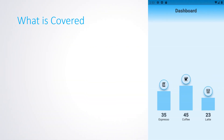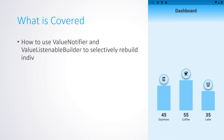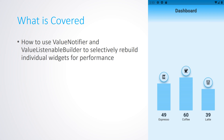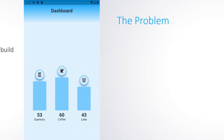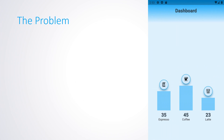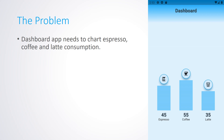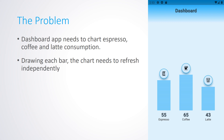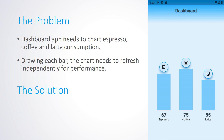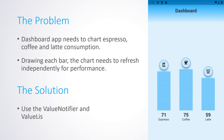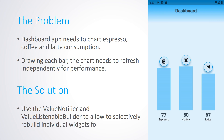In this video, we'll look at how to use the ValueNotifier and ValueListenableBuilder to selectively rebuild individual widgets for performance. The problem: a dashboard app needs to chart espresso, coffee, and latte consumption, drawing each bar so the chart refreshes independently. The solution is to use the ValueNotifier and ValueListenableBuilder to allow selectively rebuilding individual widgets for performance.